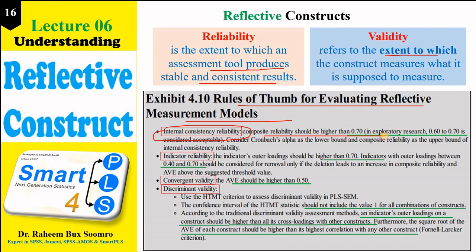For the rule of thumb of internal consistency reliability: composite reliability value should be equal to or higher than 0.7. In exploratory research, it can go down to 0.6 but not less than 0.6. Another tool is Cronbach's alpha — the value of Cronbach's alpha should also be equal to or higher than 0.7.